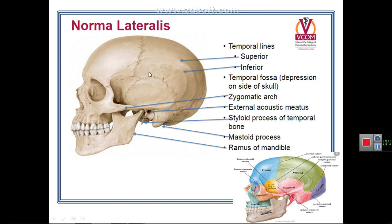The norma lateralis also shows an arch called the zygomatic arch. It is formed by the temporal process of the zygomatic bone and the zygomatic process of the temporal bone. The zygomatic process of the temporal bone forms about the posterior two-thirds of the zygomatic arch, while the anterior one-third is formed only by the temporal process of the zygomatic bone.